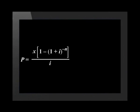We use the present value formula: P equals x multiplied by open bracket one minus open bracket one plus i close bracket to the power of minus n, close bracket, divided by i.